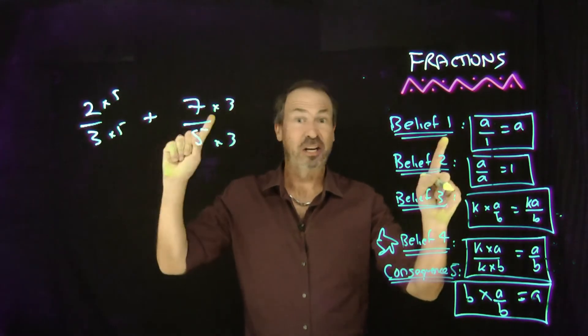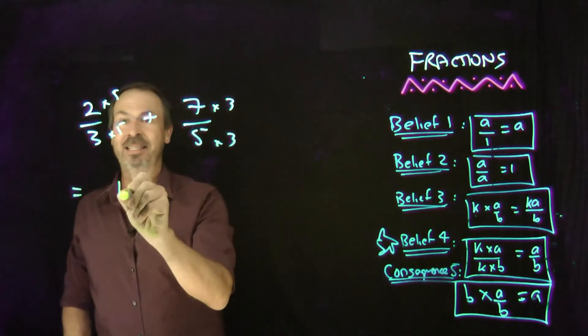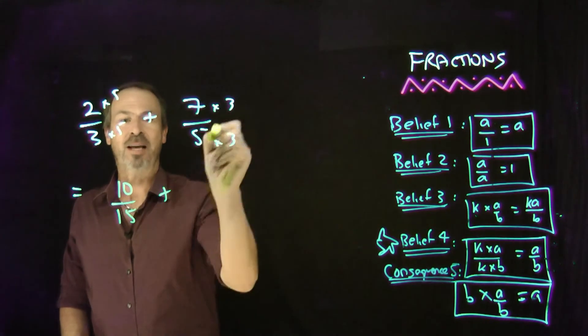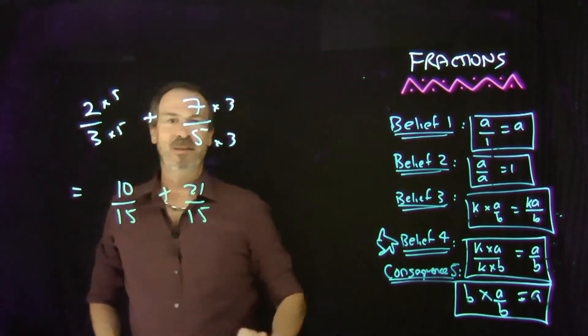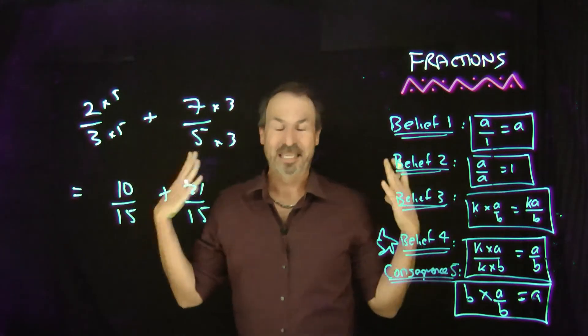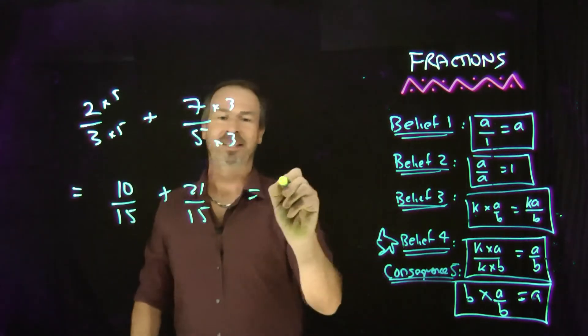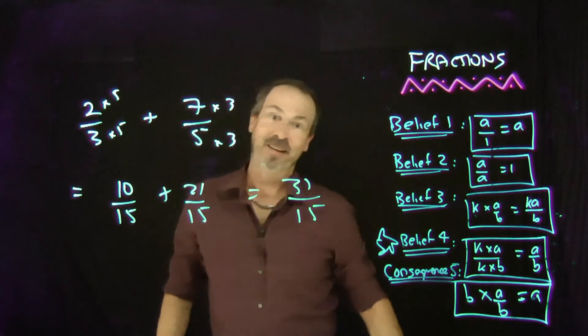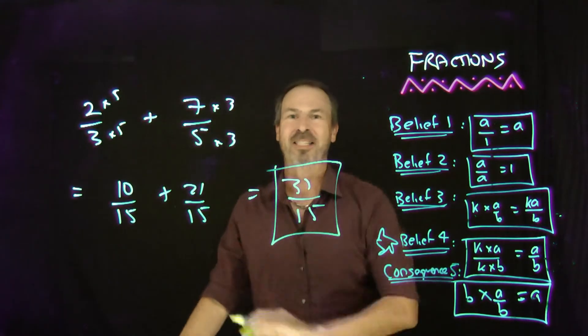Well, by belief number 4, I've changed nothing. But now I can see this is 10/15 plus 21/15. And by what I just proved about a common denominator. Oh, I can just add them like I read them. 10 somethings plus 21 somethings makes 31 somethings. Fifteenths. And I believe that's the same answer we had before.